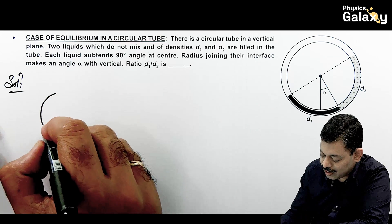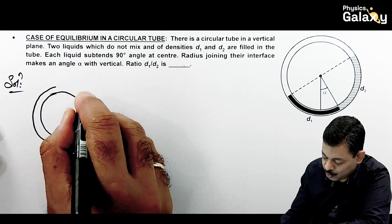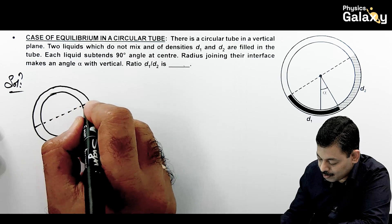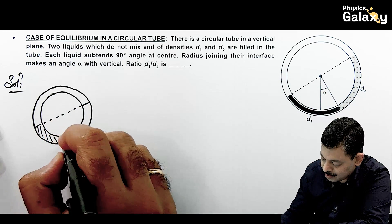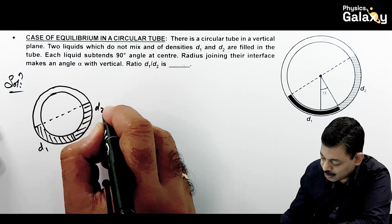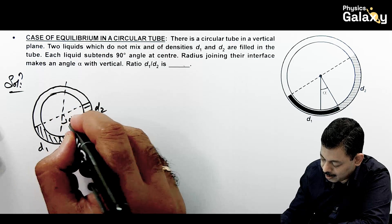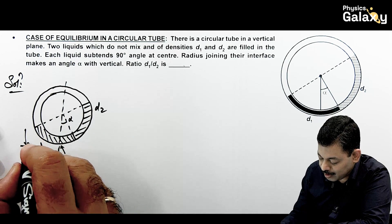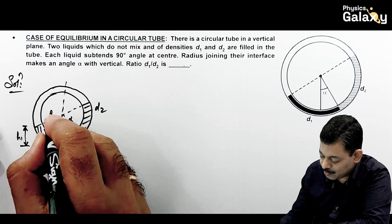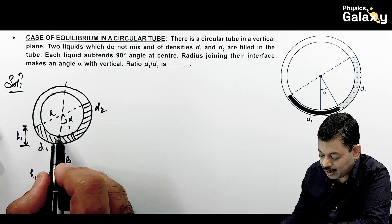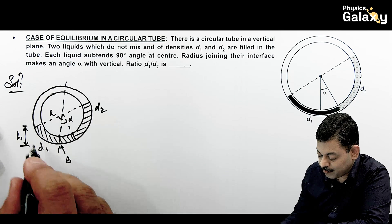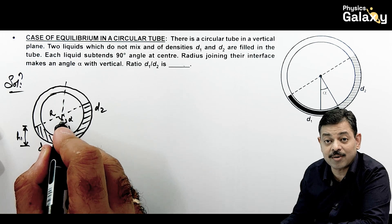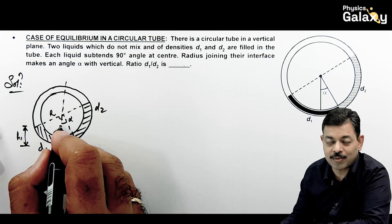In a vertical liquid column system, the pressure at any given point must be the same from whichever direction it is calculated. The tube has liquid of density d1 in one part and density d2 in another, with the interface making angle α from the vertical. Considering the bottom point B, pressure from the left and right sides must be equal. The height h1 on the left side can be written as R - R·cos(90° - α) = R(1 - sin α).